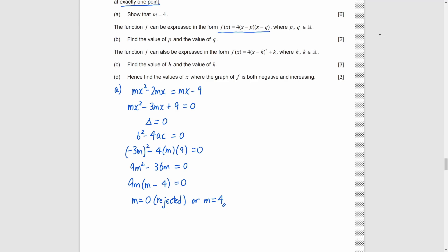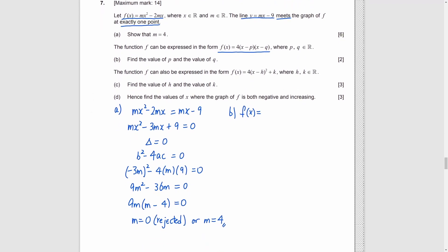Part B, we need to make f to be the factorized form. By substituting 4 for m, we have f(x) equals 4x squared minus 8x. Factorize it by taking common factor 4x. We get x equals 0 and q equals 8.